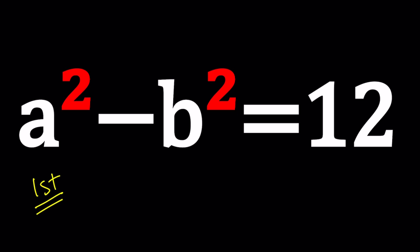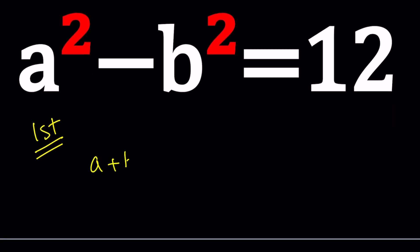A squared minus B squared is considered a difference of two squares. And there's a formula for difference of two squares, which is A plus B times A minus B. Hopefully you knew that.